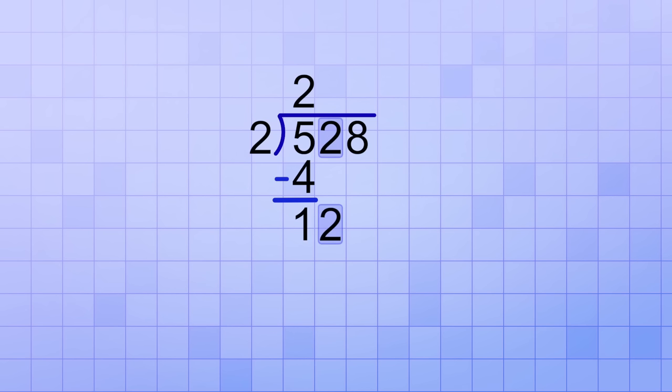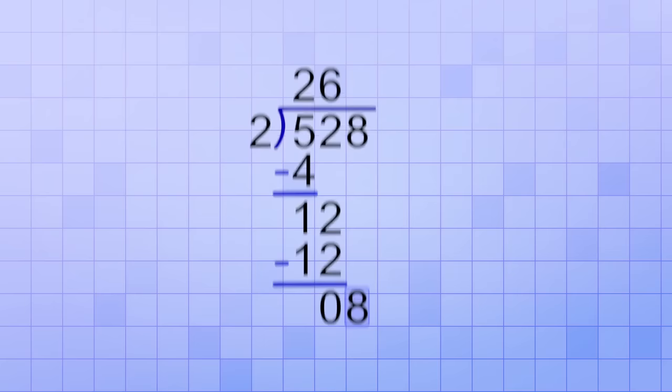Now we move to our next digit, and we need to bring down a copy of it to combine with the remainder from the first digit. Then we ask, how many 2's will make 12? That's easy, 6. So we put 6 as the next digit of our answer. 2 times 6 equals 12, and 12 minus 12 leaves no remainder.